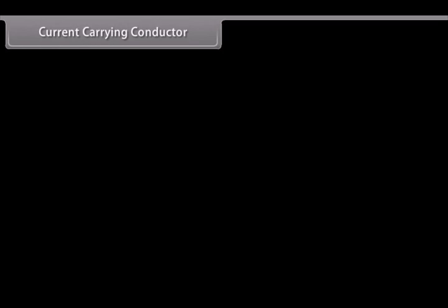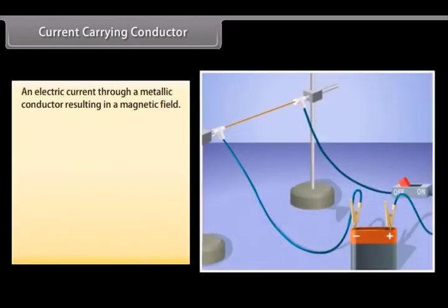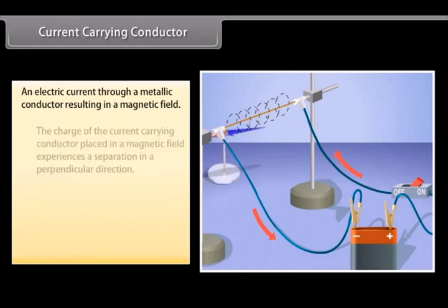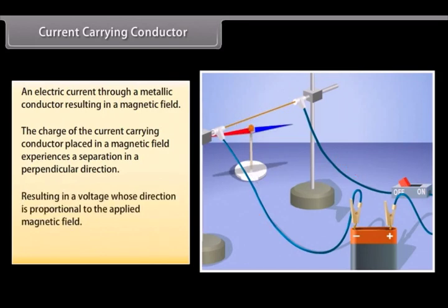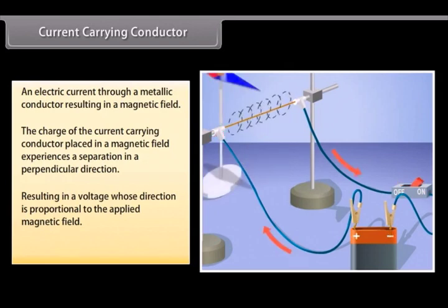Current-carrying conductor. An electric current passing through a metallic conductor results in a magnetic field being created around it. The charge of the current-carrying conductor placed in a magnetic field experiences a separation in a direction that is perpendicular to the current and the magnetic field. This results in a voltage whose direction is proportional to the applied magnetic field. This effect can also be reversed.